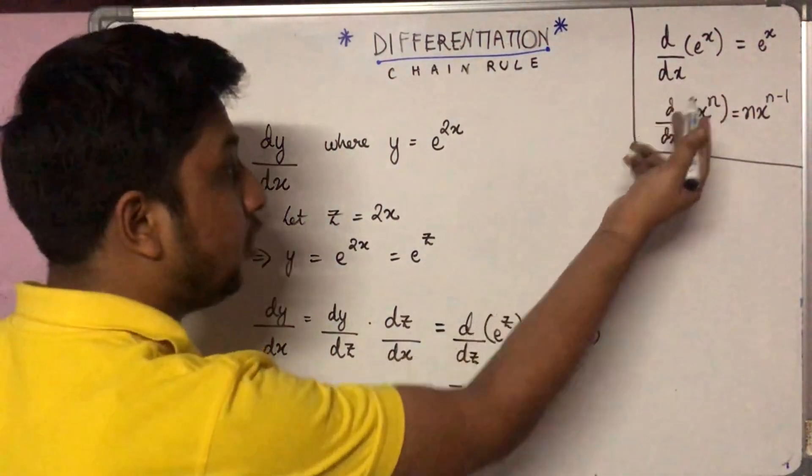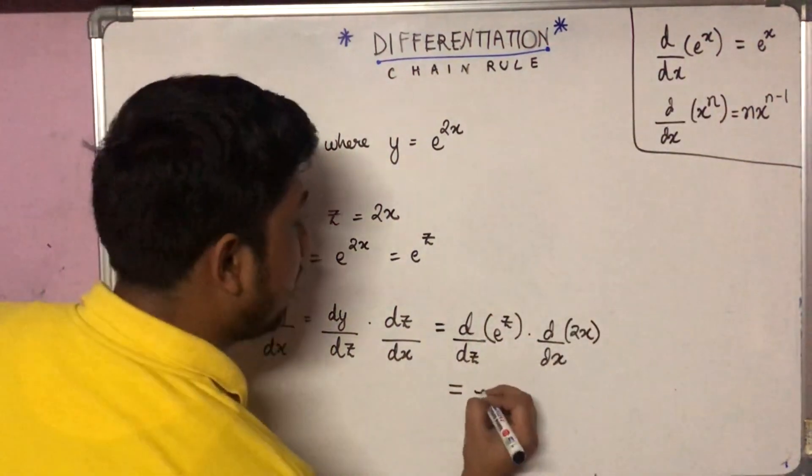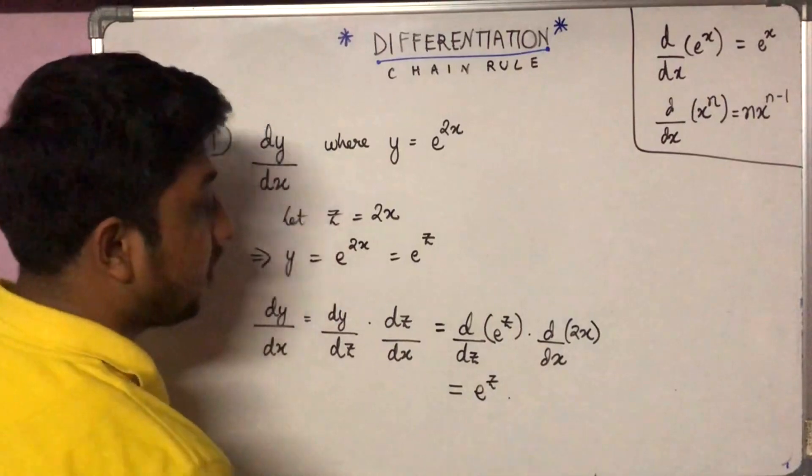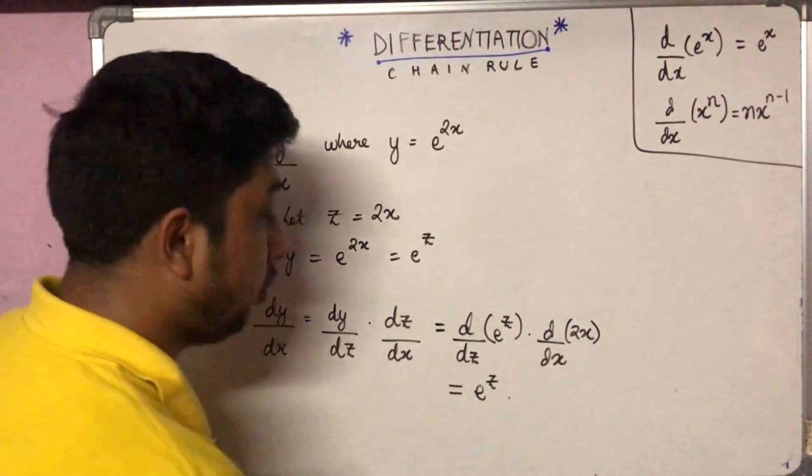Now d/dx of e to the power x is e to the power x, so d/dz of e to the power z will also be equal to e to the power z itself, into d/dx of 2x, which will obviously be 2.